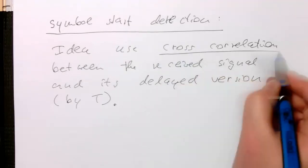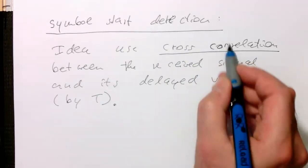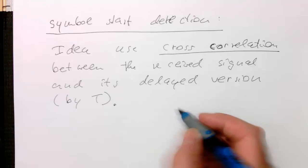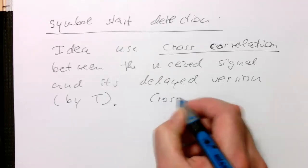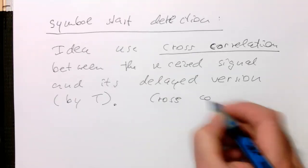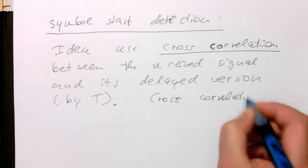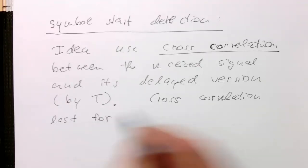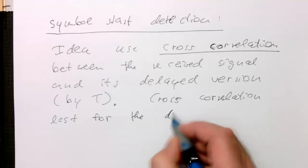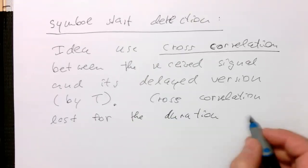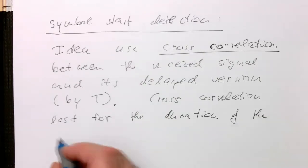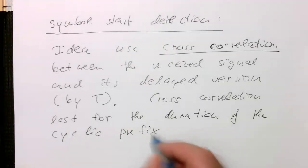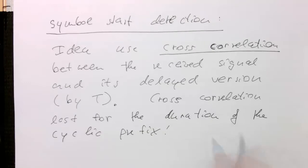Essentially, cross-correlation operation. And the cross-correlation lasts for the length of the cyclic prefix. It lasts for the duration of the cyclic prefix. So that's the idea behind that.